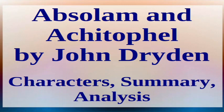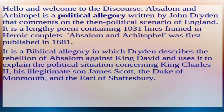Absalom and Achitophel by John Dryden: Characters, Summary, and Analysis. Hello and welcome to the discourse. Absalom and Achitophel is a political allegory written by John Dryden that comments on the then political scenario of England. It is a lengthy poem containing 1031 lines framed in heroic couplets.